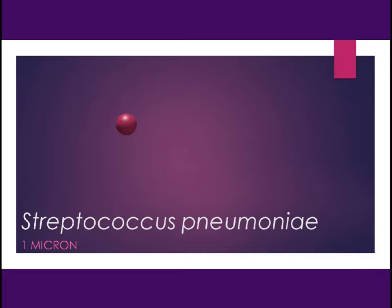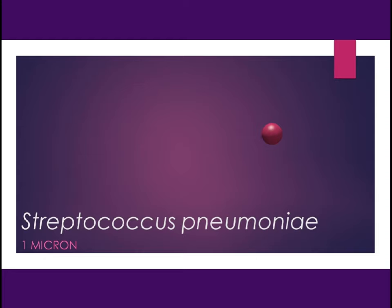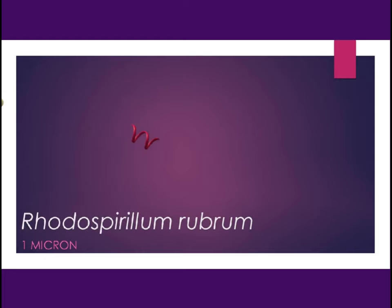Streptococcus pneumoniae is a round coccus bacteria, about 1 micron in diameter. And Rhodospirillum rubrum is a spirillum bacteria,